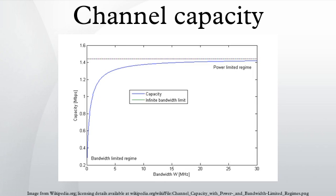Example application: An application of the channel capacity concept to an additive white Gaussian noise channel with B Hz bandwidth and signal-to-noise ratio S/N is the Shannon-Hartley theorem. C is measured in bits per second if the logarithm is taken in base 2, or nats per second if the natural logarithm is used, assuming B is in Hz.